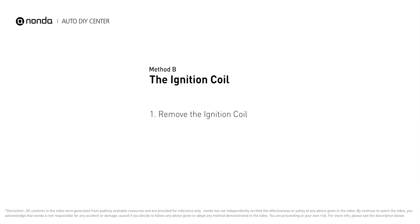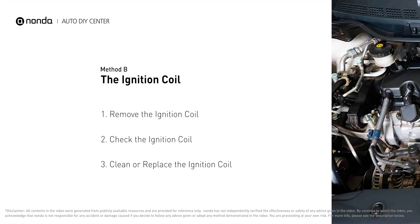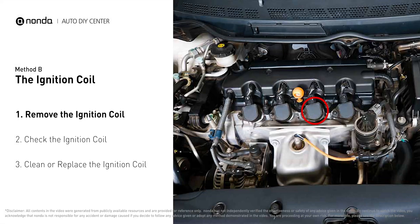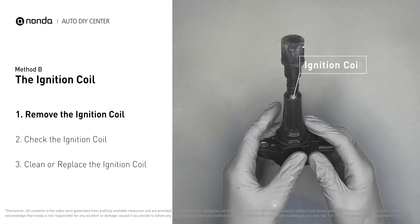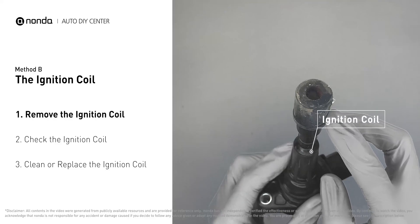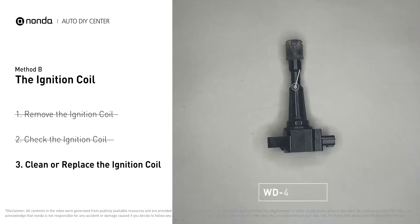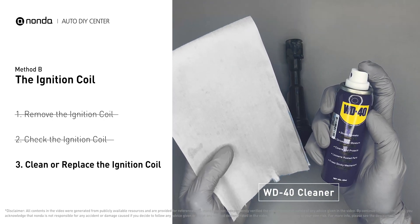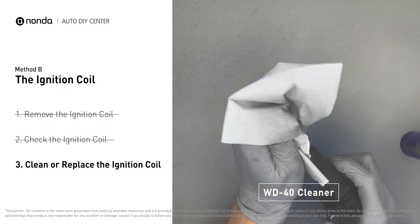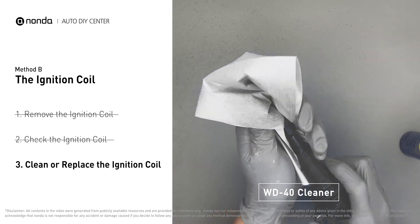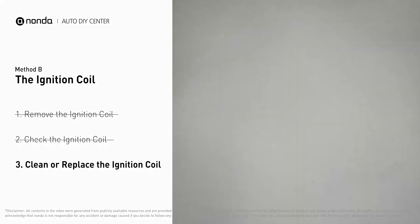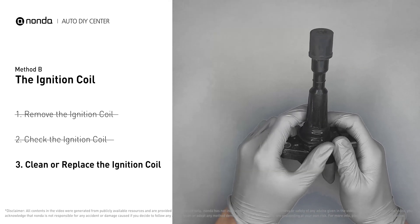Ignition coils are usually installed directly at the cylinder head, above the spark plug. First, carefully remove the ignition coil from the engine and check to see if it is either stained or damaged. If the ignition coil is covered with engine oil or stains, simply clean it with a WD-40 cleaner.